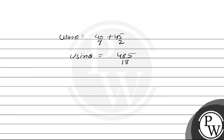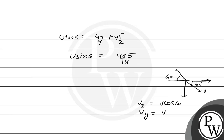Now let's consider when the ball was landing. The velocity vector makes 60 degrees with the horizontal. The final velocity is v. The component of final velocity in the x-direction is v·cos60°, and in the y-direction is v·sin60°. This y-component is negative because we defined upward as positive and this vector points downward, so it is −v·sin60°.